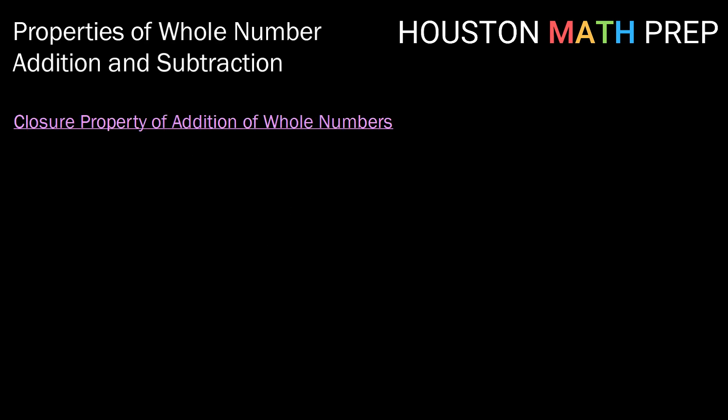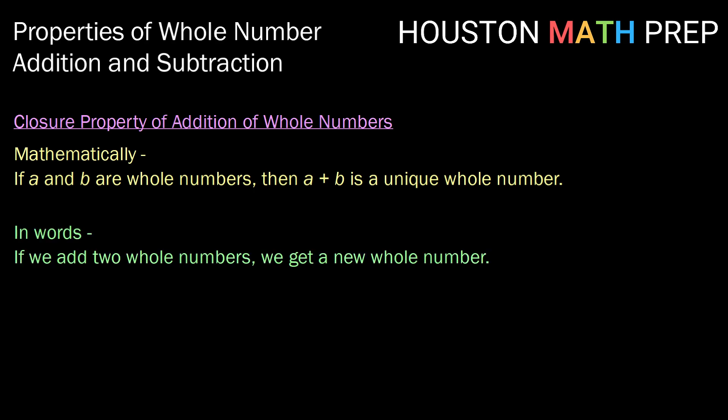So let's jump into our properties. Our first property that we're going to talk about is the closure property of addition for whole numbers. Mathematically, the closure property says if A and B are whole numbers, then A plus B is a unique whole number. While I definitely think it's important to show the mathematical definitions, when we're working with younger learners, we definitely want to have a different way of stating that so that it's more easily understandable. So in words, we might say, if we add two whole numbers, we get a new whole number.